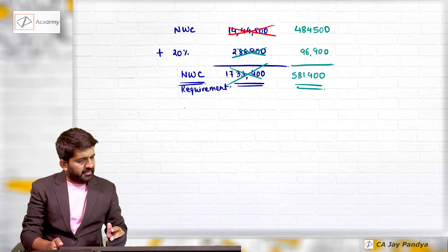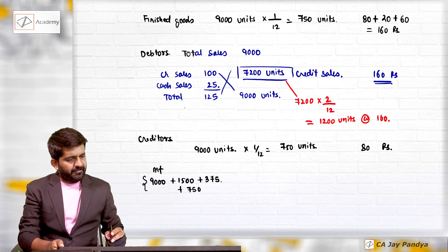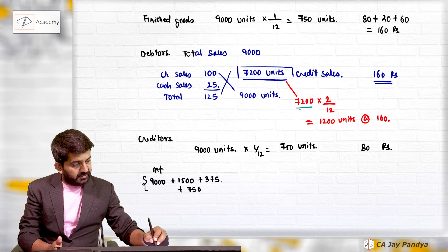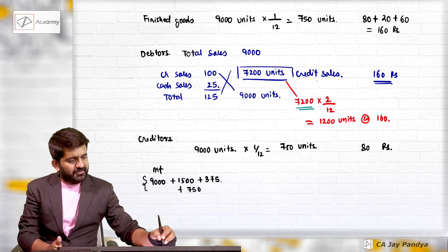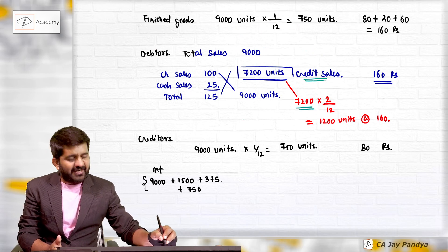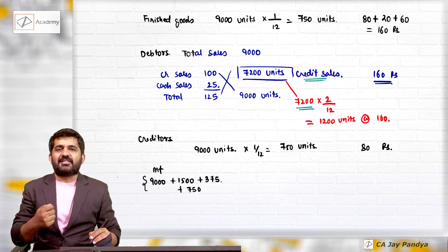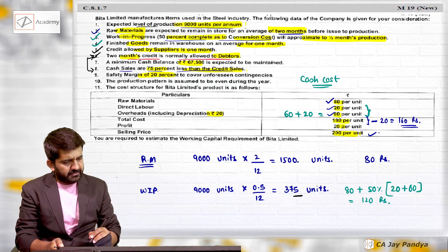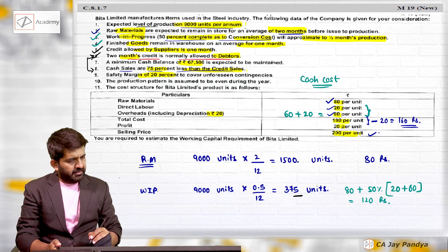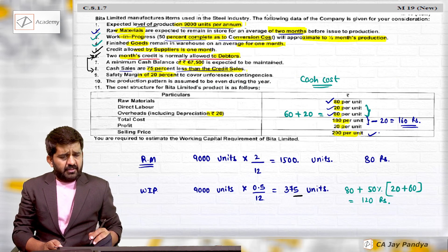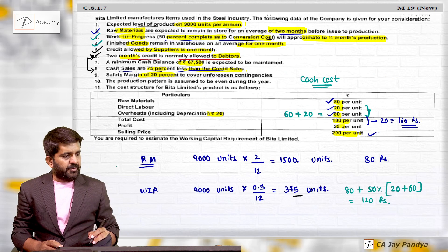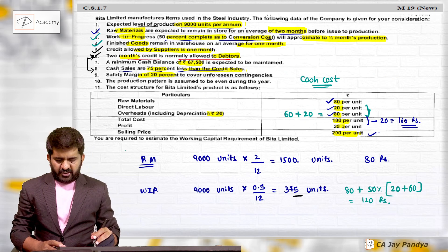We had incorrectly taken total credit sales units instead of applying the debtors period, so the answer was wrong. Now we have rectified it. This is again an easy question - 8.1.7, May 2019 exam question.